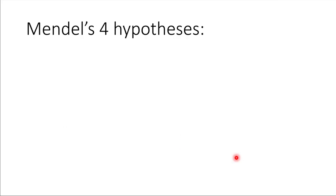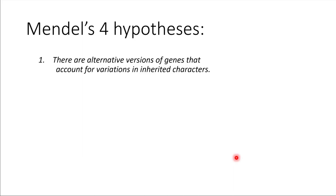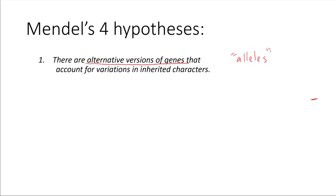Mendel had four major hypotheses that he investigated. Hypothesis number one: he hypothesized that there are alternative versions of genes that account for the variations in inherited characters. What he was really saying is that there are different versions of genes, and that ends up leading to different features — like some plants have purple flowers, others have white flowers. The alternative versions of genes are called alleles. We'll be using that word quite a bit going forward.